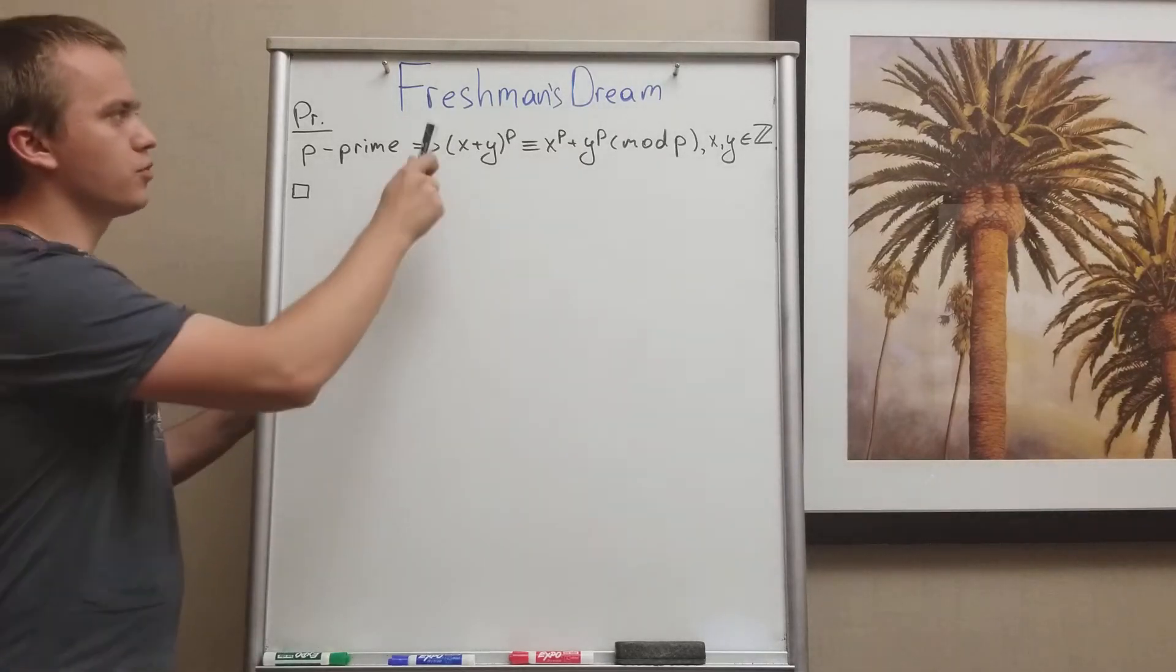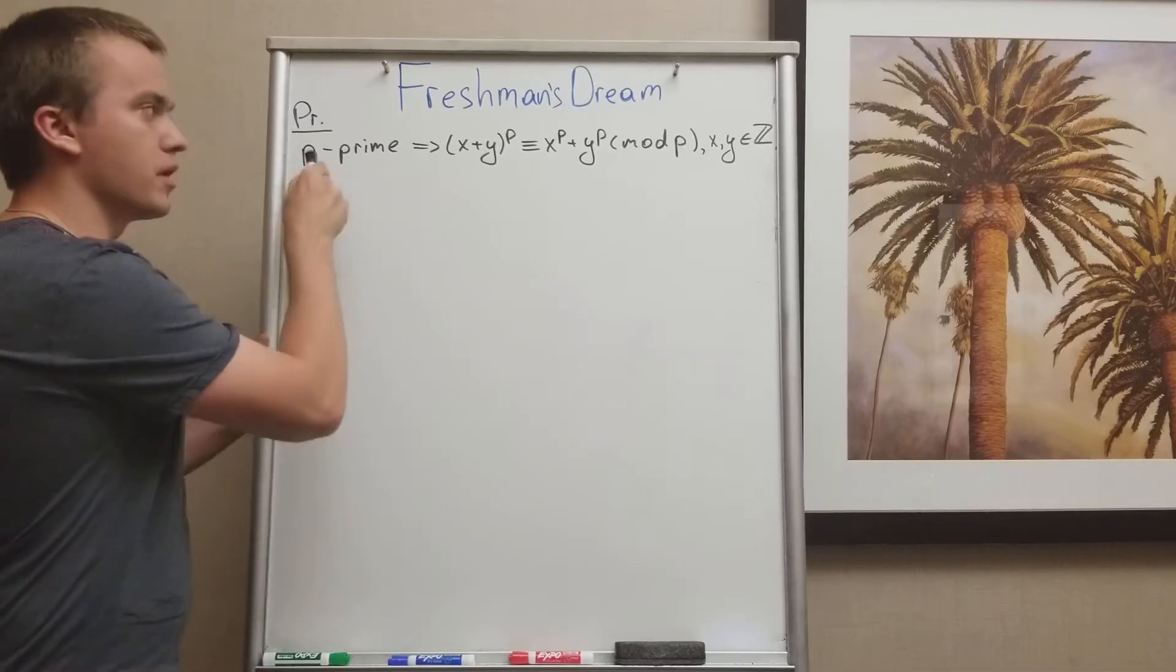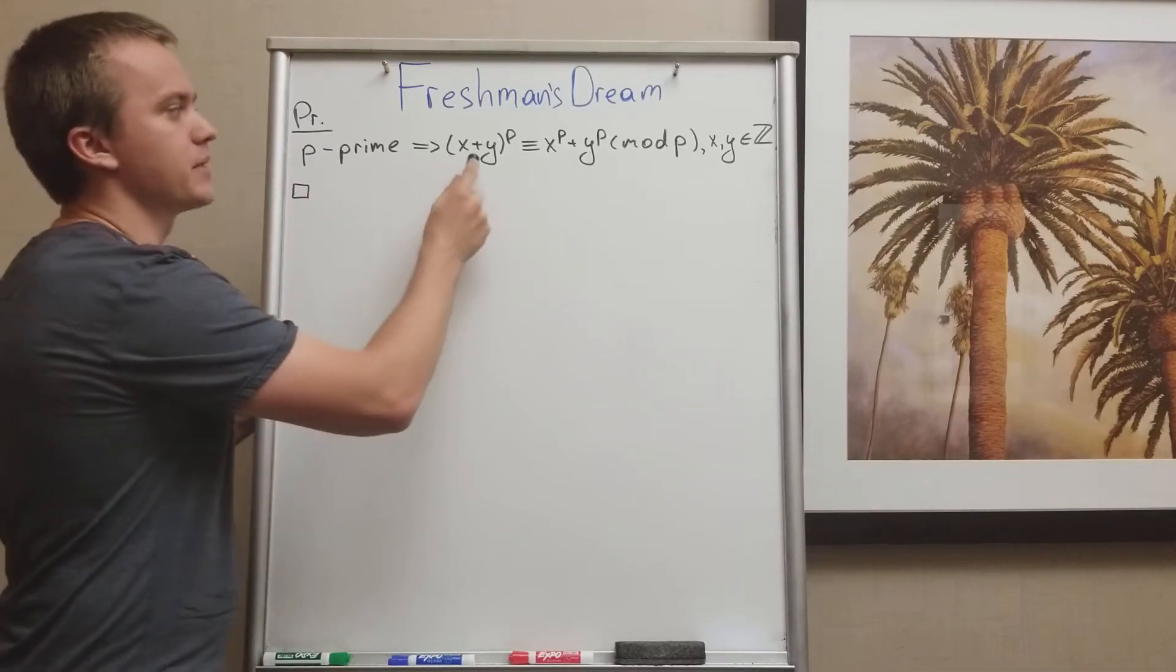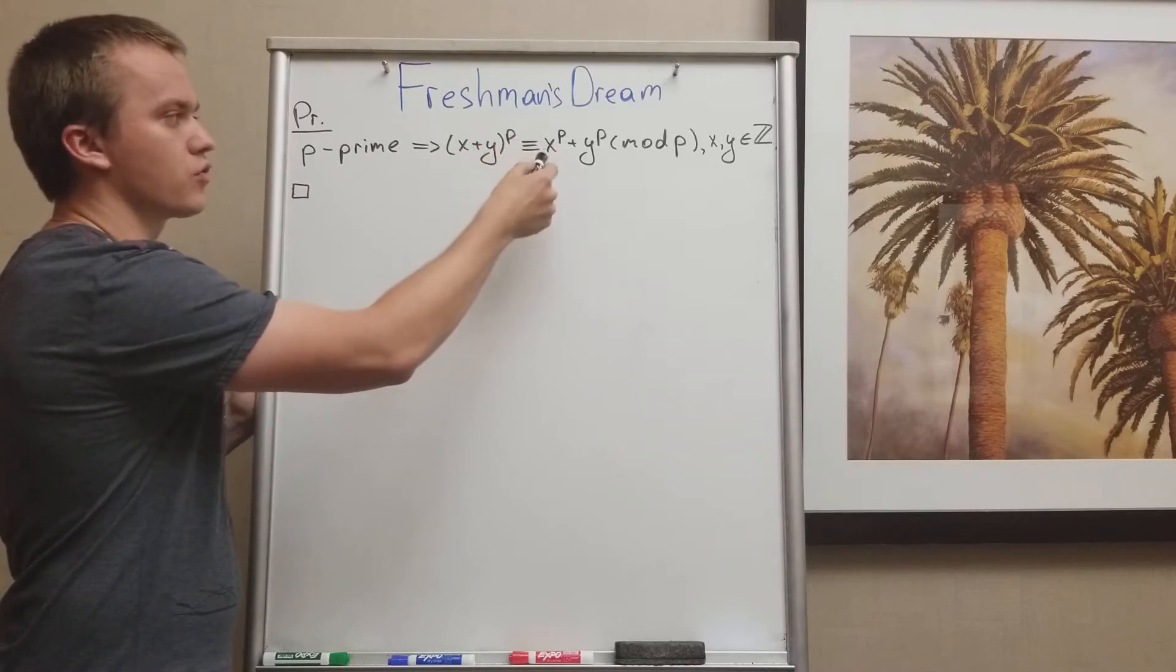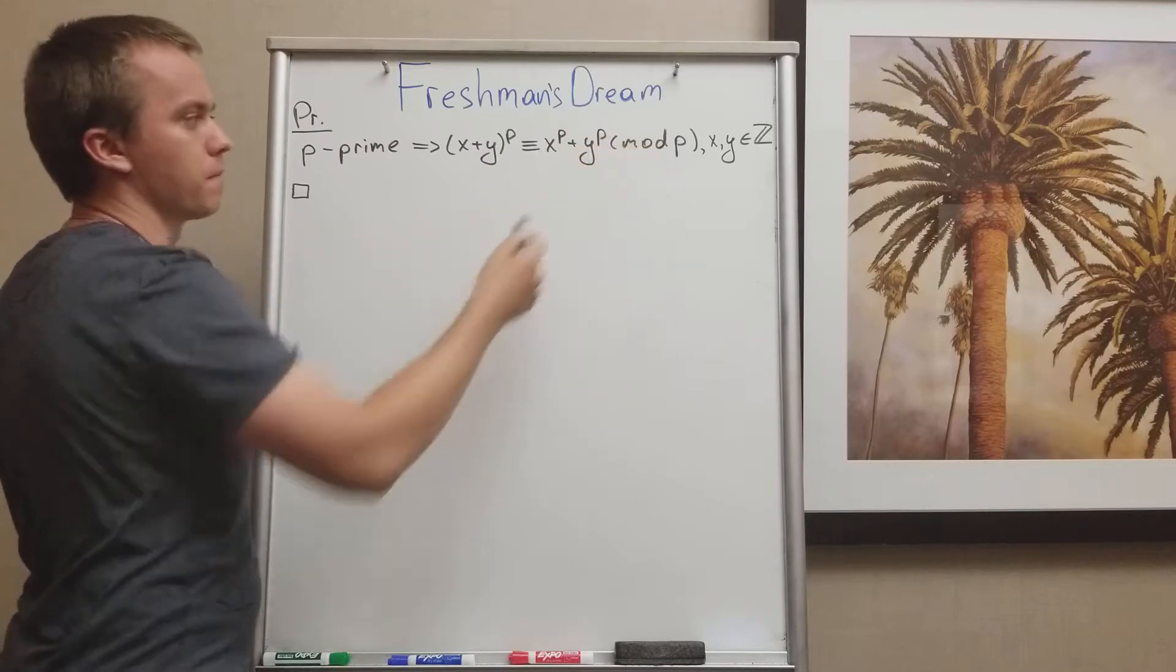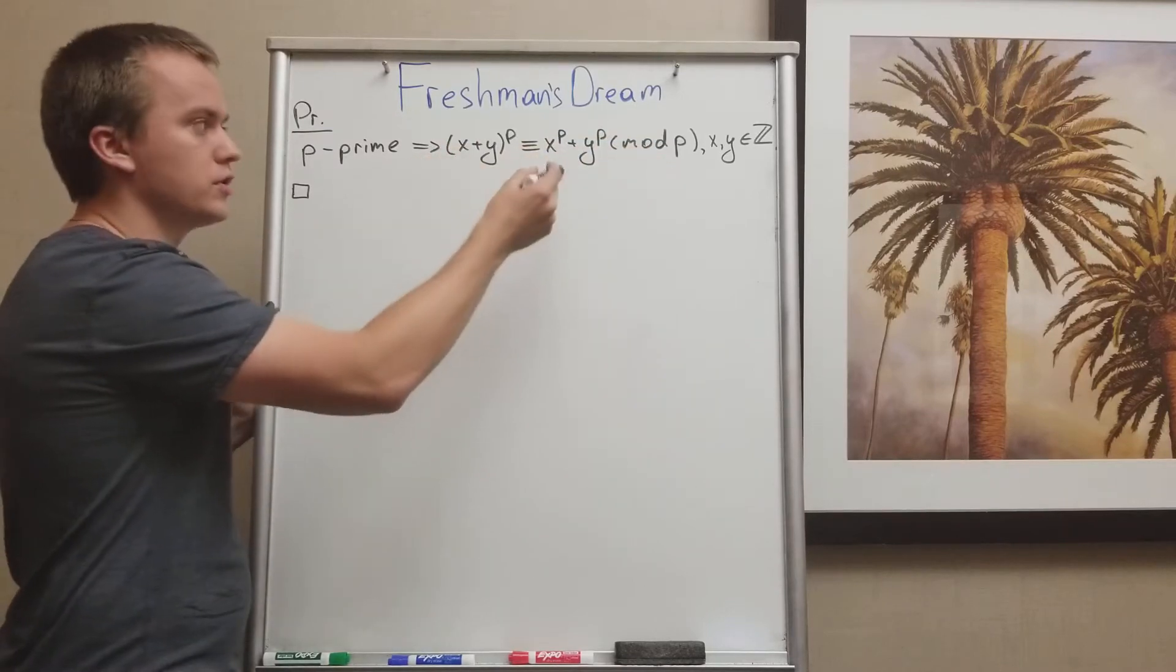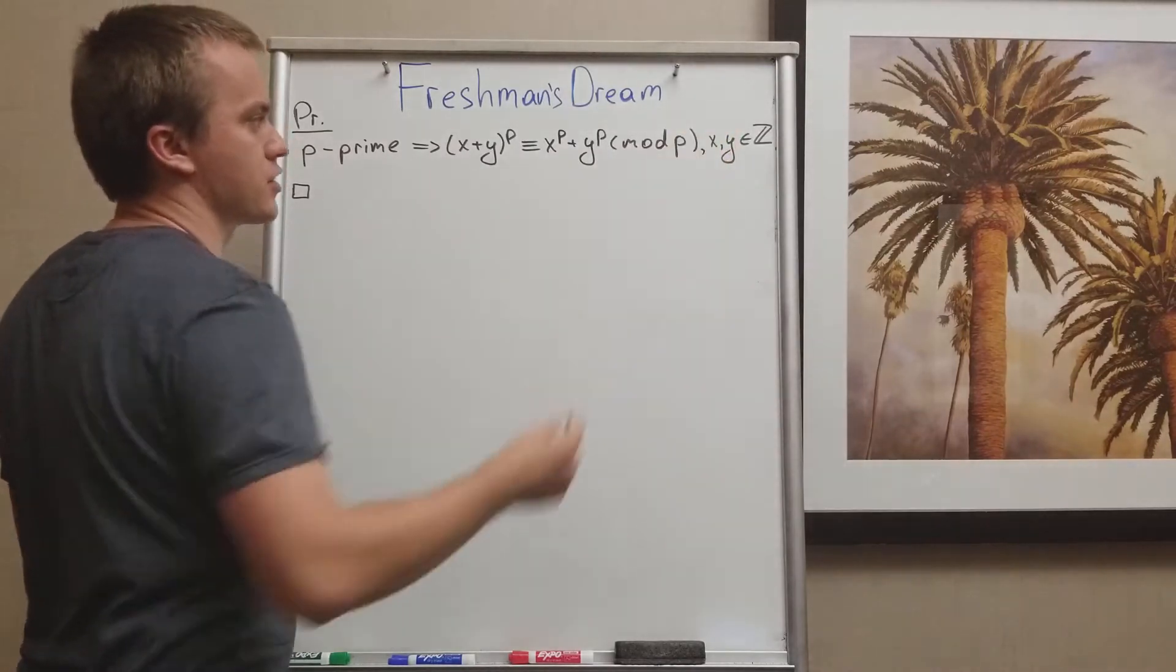Hello guys, in this video I want to prove Freshman's Dream. With Freshman's Dream, if we're given a prime number, I want to show that x plus y to the power of p is congruent to x to the power of p plus y to the power of p mod p. So this inequality holds in congruence relation, and this is true for any integers x and y.